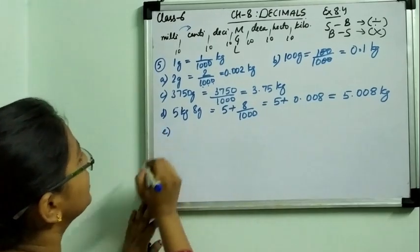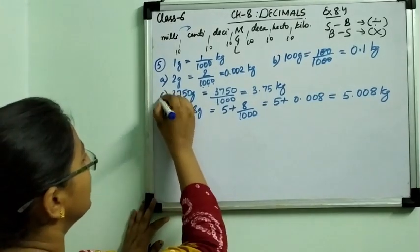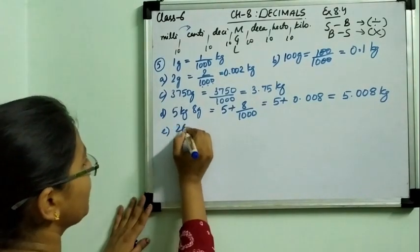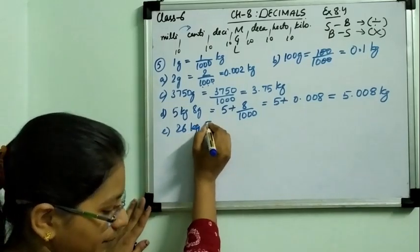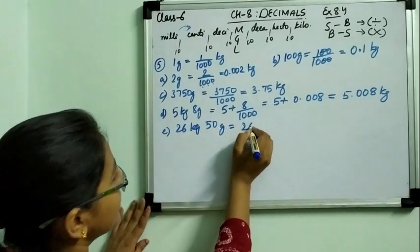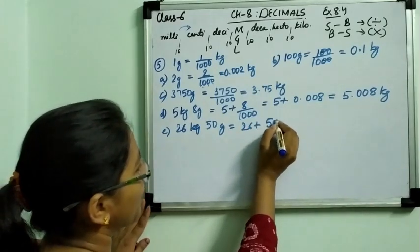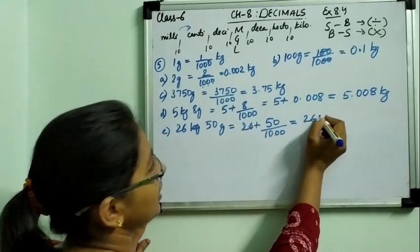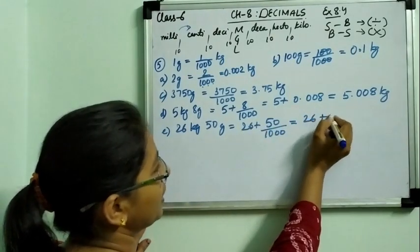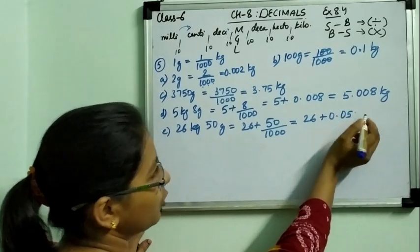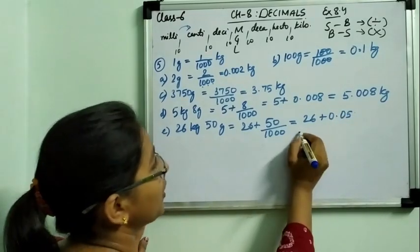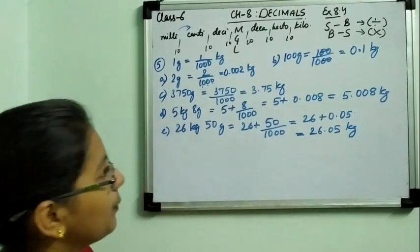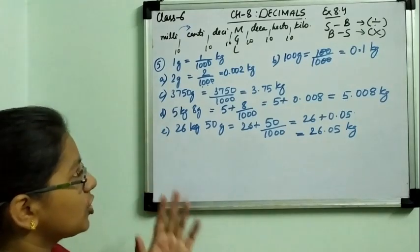Now part E: it is 26 kilogram and 50 gram. So 26 plus 50 gram converted to kilogram: 50 upon 1000. Decimal after 3 digits gives 0.050. The trailing zero is dropped, so 26 plus 0.05 equals 26.05 kilogram. In this way we have completed question number 5 and understood the technique of unit conversion.